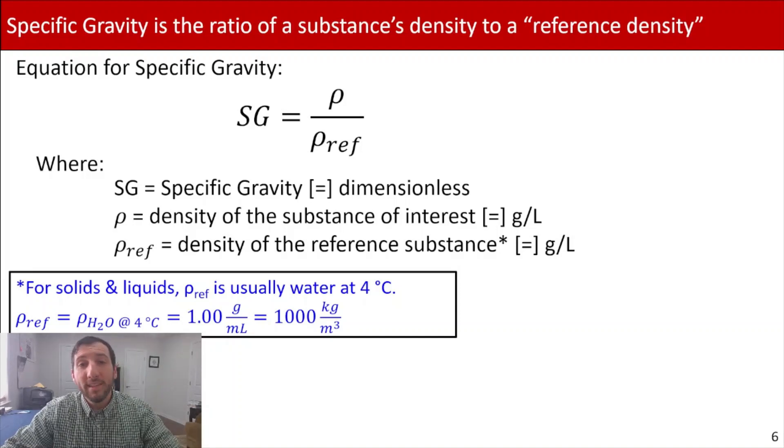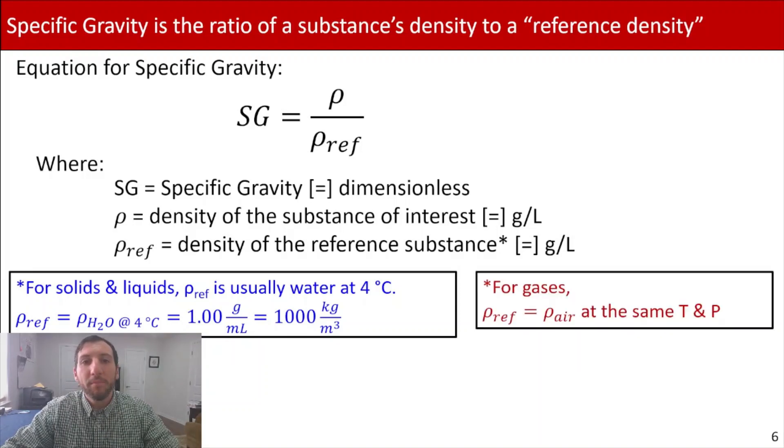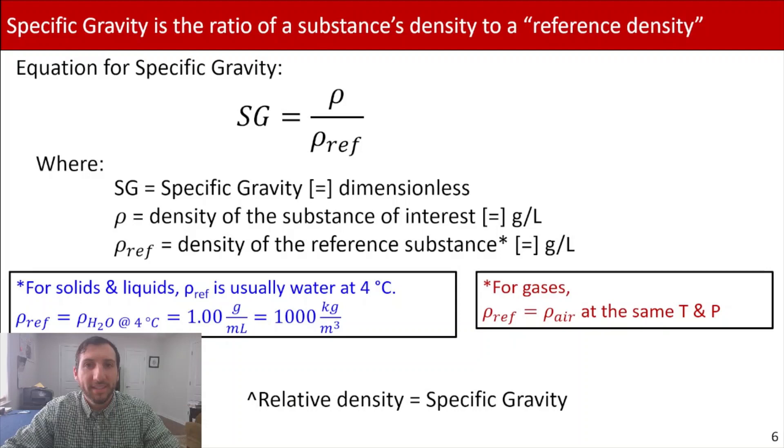Now, when we're dealing with gases, in that case, our rho reference is going to be different. And it's now going to be the density of air at the same respective temperature and pressure as the gas you're dealing with. Now, something else to be aware of is that sometimes somebody may not be using the term specific gravity. Instead, they may be using another term called relative density. Do not be alarmed. It's okay. That relative density is the same thing as specific gravity. Some people just prefer to use the term relative density rather than specific gravity. But at the end of the day, it's all the same.